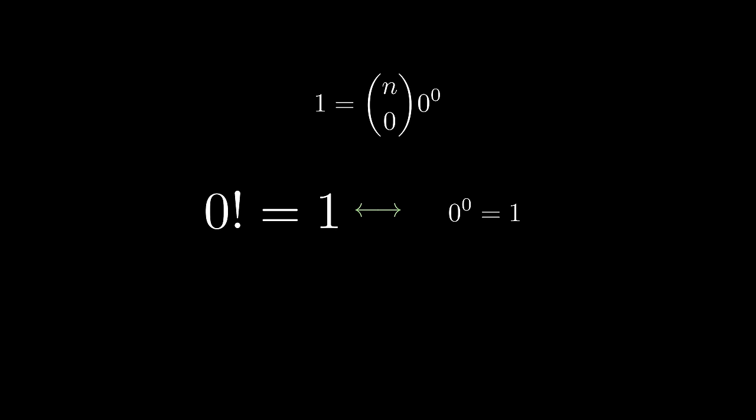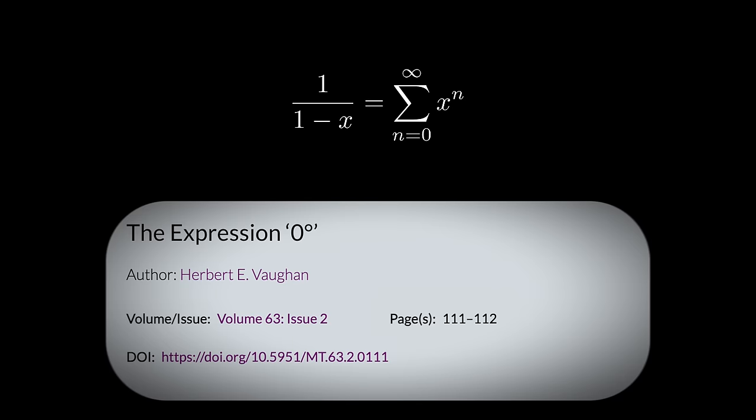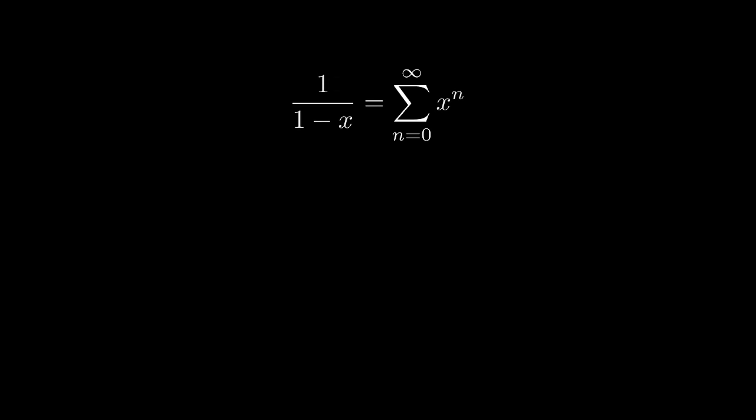To be frank, I do acknowledge that 0 to the power of 0 is more difficult to understand. Another simple but classic example is given by Herbert Wilf in 1970, the geometric sequence. If we set x as 0, on the left-hand side, we have 1.